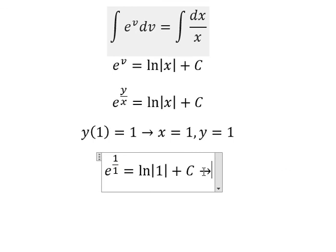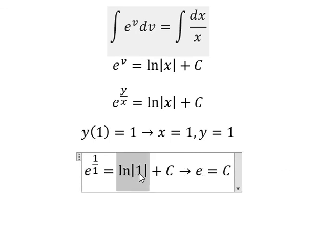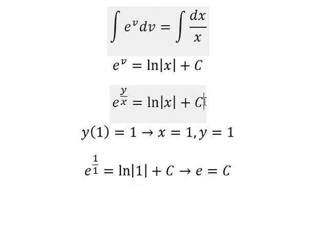So we have e equals to C, this one equals to number zero. And now we put e go back in here.